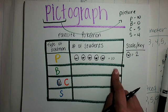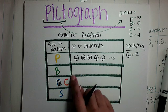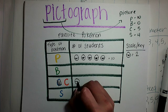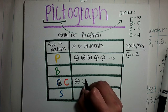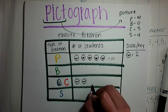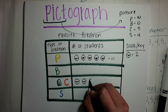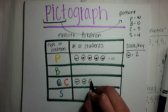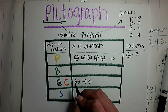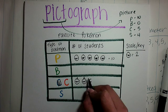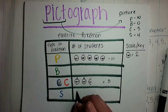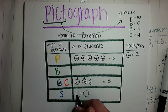Bulbasaur — poor Bulbasaur — every day, zero. Charmander has five. If I'm counting by twos: two, four. I can't add a whole other one because that's going to give me six, so I have to draw half, which gives me five. So this is two, this is two, and this is one, which gives me five. And then Squirtle has two Pokeballs.